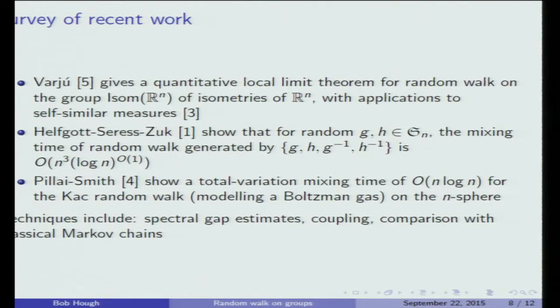One other recent paper that I like is the Kac random walk is a model where you have n particles, and at each step you pick two of them and choose a random rotation in the plane that they determine. You think of these particles as having some velocity, and you choose the plane that contains their velocities, and you pick a random angle, and you rotate the two vectors in that angle, and then you want to know how long it takes for those vectors to become uniform. They showed that the vectors themselves become uniform in time n log n. There are a lot of techniques that go into these: spectral techniques, coupling, combinatorial arguments, comparison with other Markov chains.